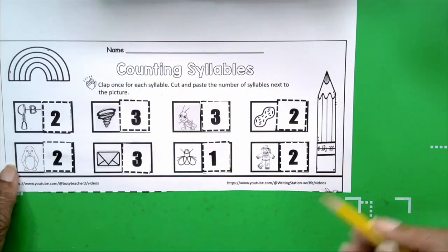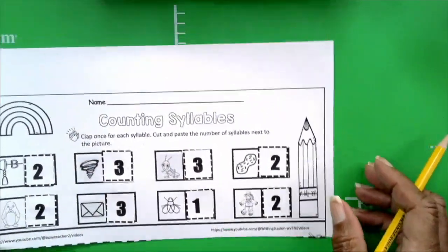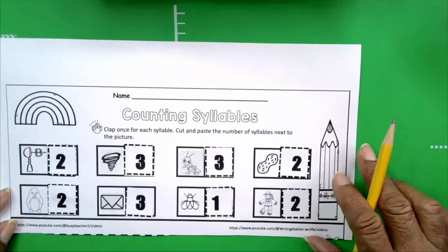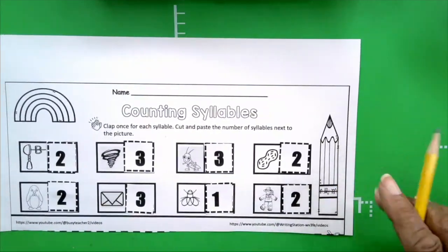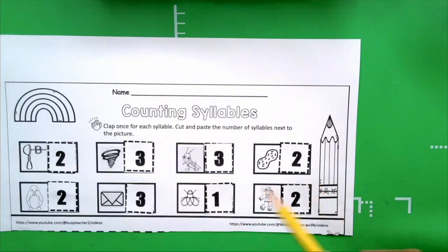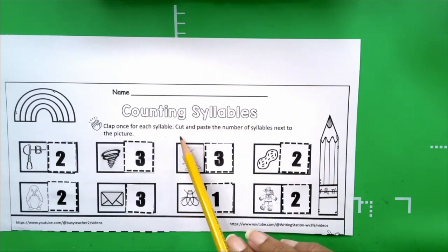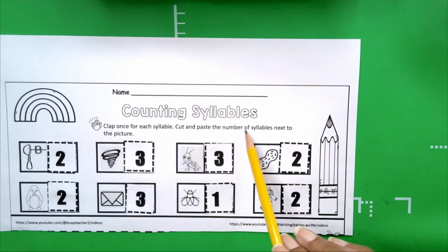Okay, boys and girls, we finished our activity, and I know you did a great job. Let's just review what we did today. We read our directions and we followed them. Clap once for each syllable, and that's what we did. We clapped once for each syllable that we heard. We cut and pasted the number of syllables next to the picture.